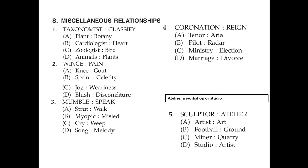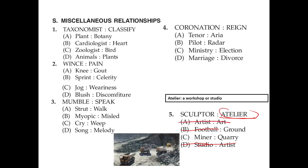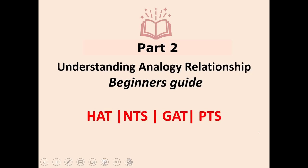Atelier is a workshop or studio — for example, where a sculptor does pottery work. We need a person on the left side: artist is a person, football is not a profession, studio is a place. A sculptor is a profession, artist is a profession. Miner and quarry: a quarry is where miners work and things are mined. Artist and studio would have been right with the reversed sequence, but it's not correct here. So C — miner and quarry — is the right answer.